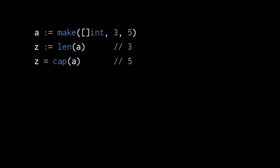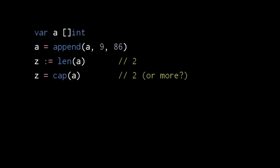To get the length and capacity of a slice, we use the built-in functions len and cap. An uninitialized slice has a length and capacity of 0. If we append to a zero slice, we get a non-zero slice with the appended values. When append creates a new larger array, it sometimes chooses to make an array larger than is needed for the new values. Append does this as an optimization — if we append to an array once, we'll likely append to it again, and so allocating extra space may make future appends cheaper if they can use existing arrays rather than creating new ones.